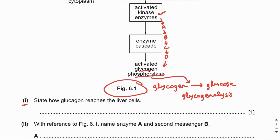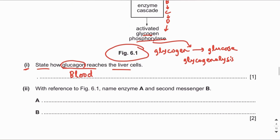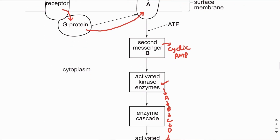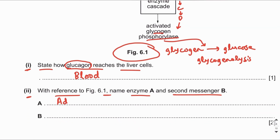Let's solve the question: state how glucagon reaches the liver cells. Glucagon is a hormone; hormones are released into the blood and transported via blood to their target organs. The target cell of glucagon is the liver cell, so glucagon reaches the liver cells via the blood. With reference to figure 6.1, enzyme A is adenylyl cyclase and the second messenger B is cyclic AMP.